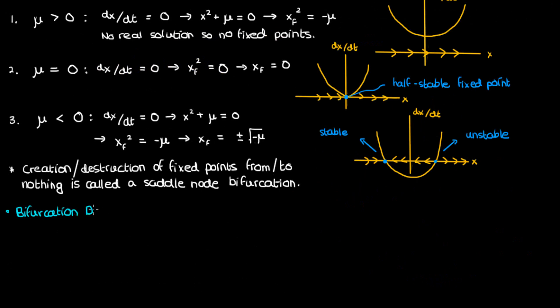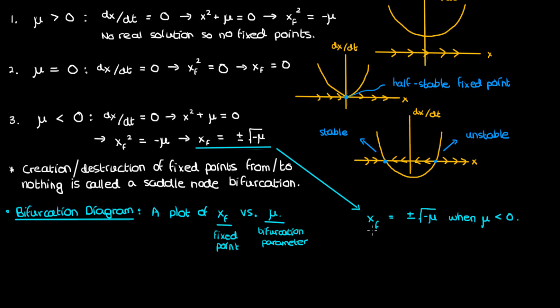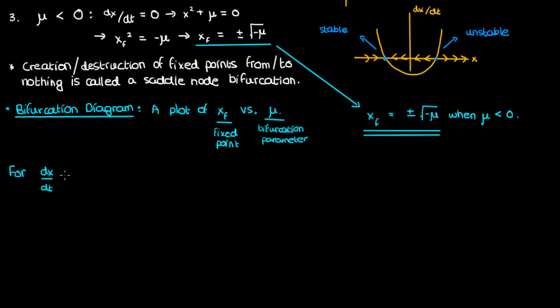One way to represent a bifurcation is to use a bifurcation diagram. The idea is to plot the evolution of the fixed point x_f as a function of the parameter μ that you're varying. For this differential equation we know x_f equals ±√(−μ) when μ is negative. So our bifurcation diagram is a plot of this function. For positive μ there aren't any fixed points, so we plot nothing on the right half of the coordinate plane.